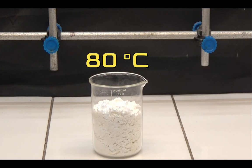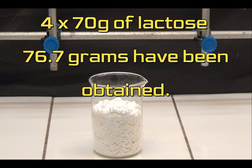The solid obtained is dried at 80 degrees in an oven and then weighed. I carried out 4 equal operations with 70g of lactose each, and a total of 76.7g have been obtained.